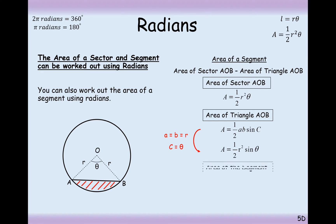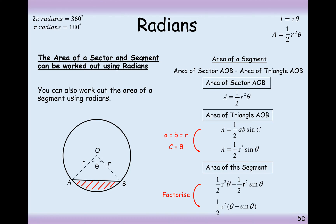We can construct a formula: it's going to be half r squared theta minus half r squared sine theta. There are a lot of common factors, so we pull them out: half r squared, and it's going to be theta minus sine theta, when theta is in radians.